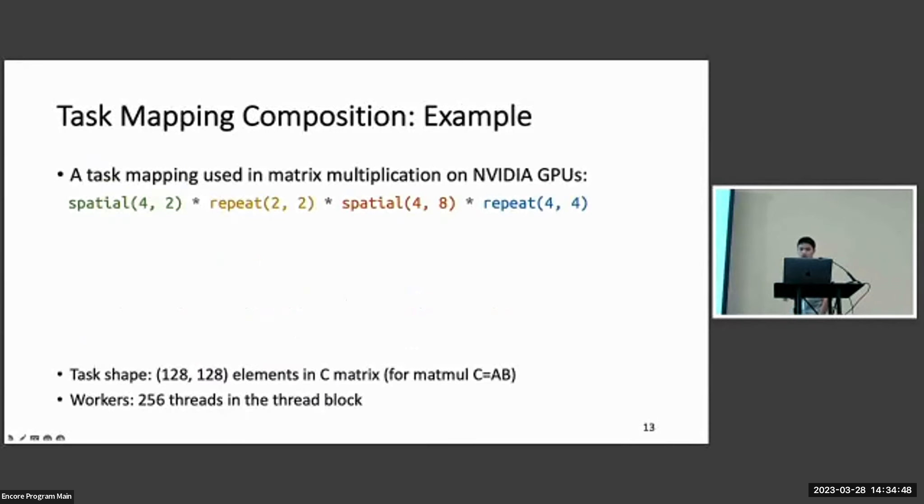It's very powerful, and I will give a practical example here. In the matrix multiplication on the CUDA platform, we will partition the C matrix into different tiles, and this task mapping will map the 256 threads in the thread block to the 128 by 128 elements in the C tile.